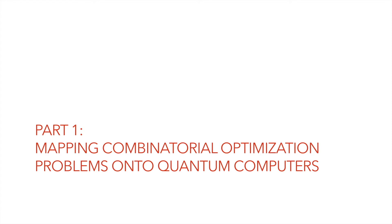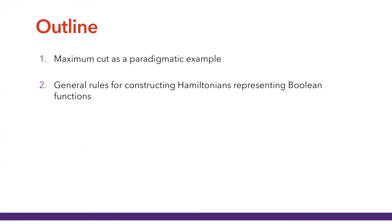Let us now switch gears and talk about mapping combinatorial optimization problems onto quantum computers, and in the third part we're going to talk about how to solve them. I'm going to start by walking you through maximum cut as a paradigmatic example — probably the most well-studied problem for quantum optimization — and then from that understanding I will show you general rules for constructing Hamiltonians representing Boolean functions, providing a more general framework for mapping your particular problem onto quantum computers.